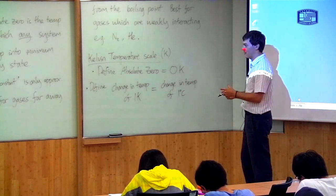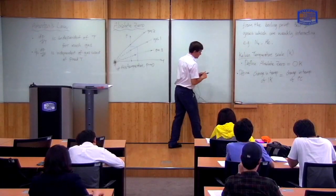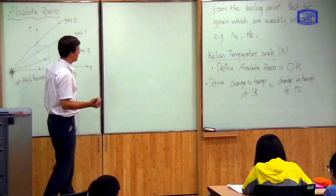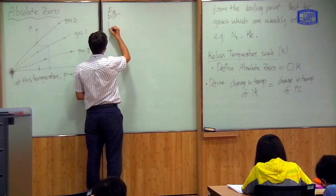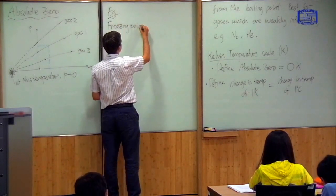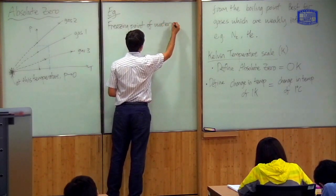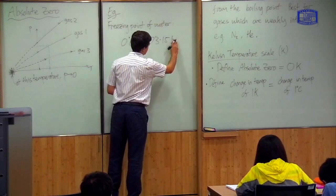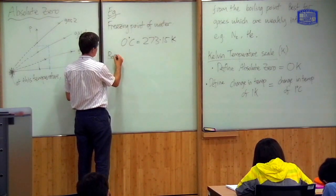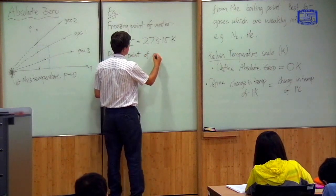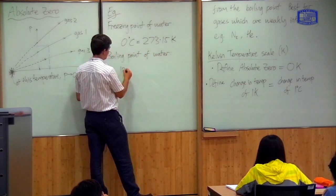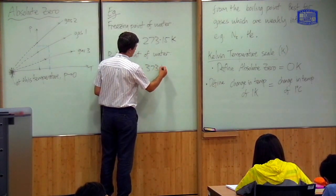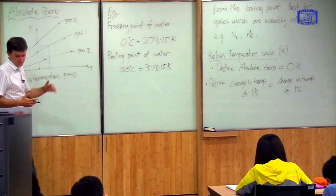So the unit scale is the same as the Celsius scale, but the zero point is different. The fact that the sizes of the scales are the same makes it easy to convert between Celsius and Kelvin — you just have to add 273.15. So for example, the freezing point of water is zero degrees C, which is 273.15 Kelvin. The boiling point of water is 100 degrees C, so to get it in Kelvin I add 273.15 and I get 373.15. So it's easy to convert between Celsius and Kelvin temperature scales.